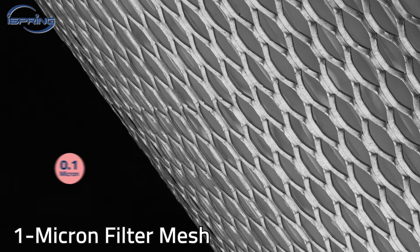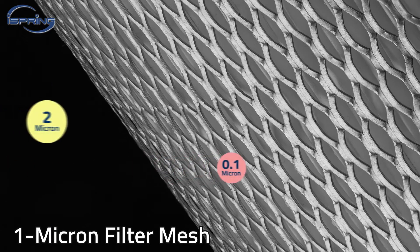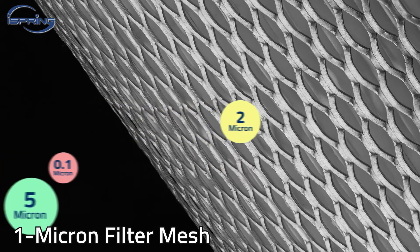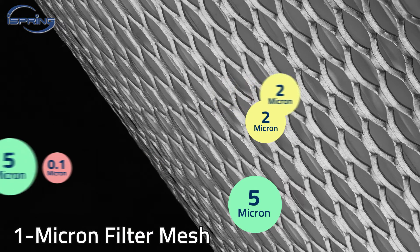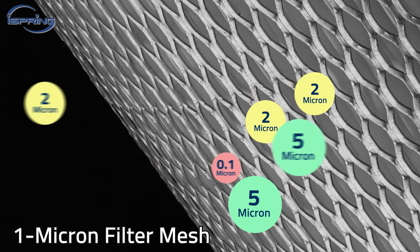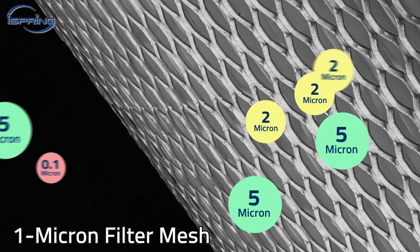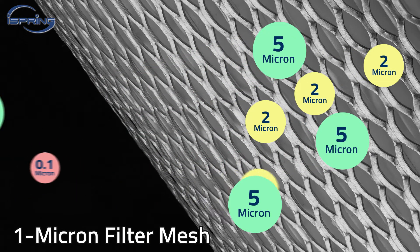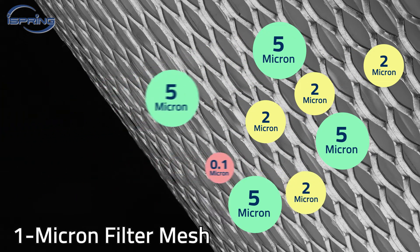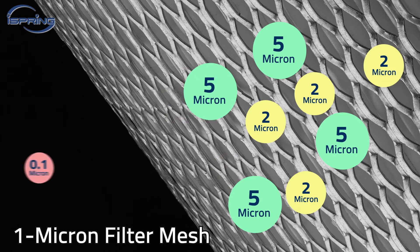A one micron water filter can filter out particulates one micron or larger. Therefore, it's essential to know the size of particulates you want to remove from the water, so you can choose a corresponding size filter.